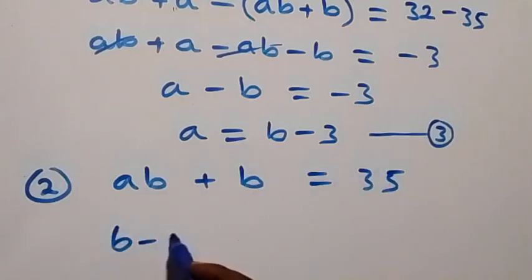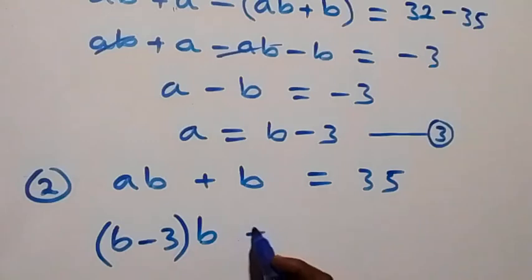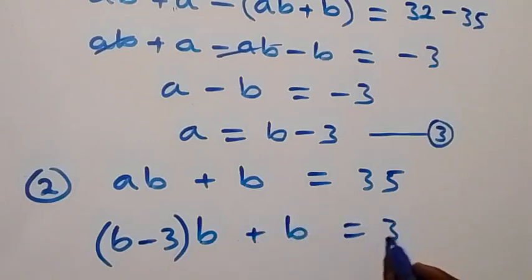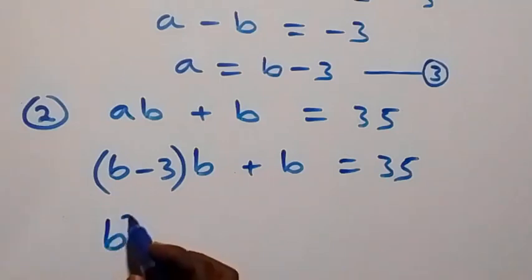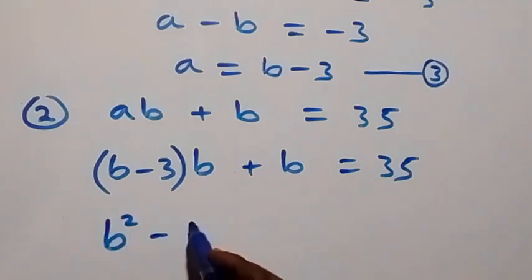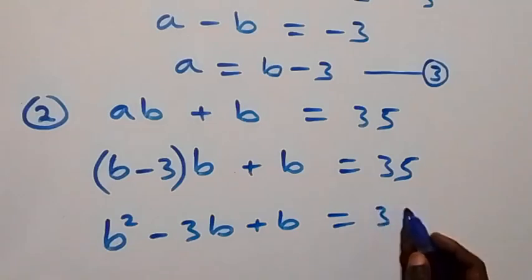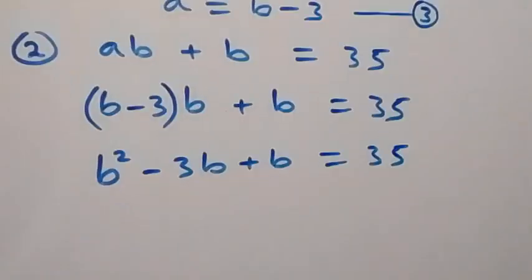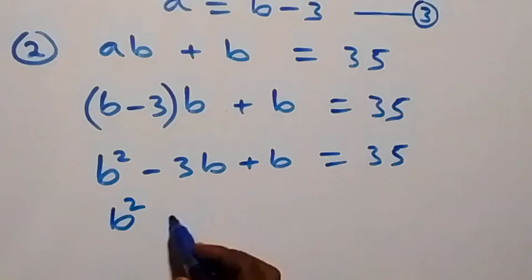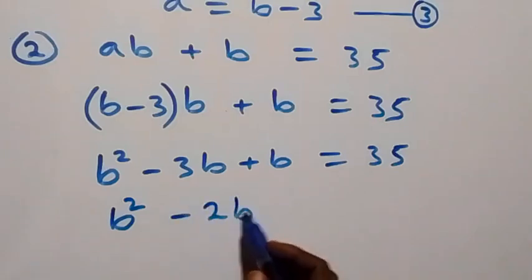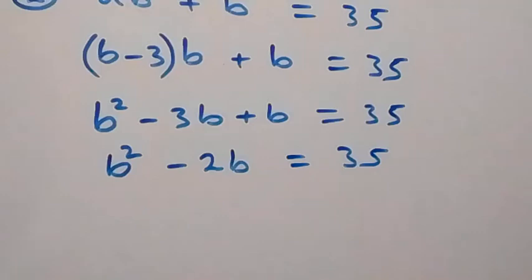Substituting a equals b minus 3, we get (b minus 3) times b plus b equals 35. Opening the bracket this becomes b squared minus 3b plus b equals 35, which simplifies to b squared minus 2b equals 35.